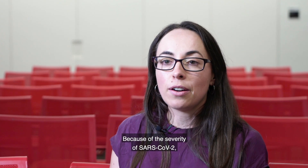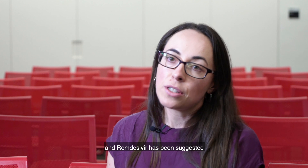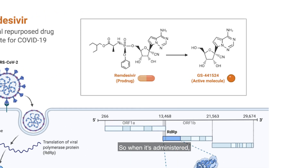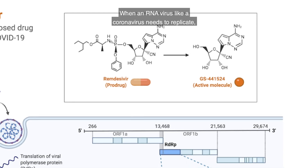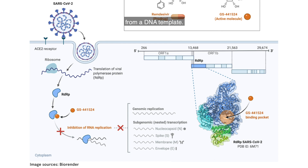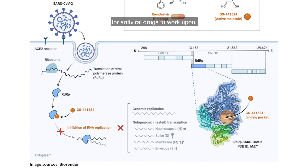Because of the severity of SARS coronavirus 2, there's obviously a lot of interest in developing specific treatments against it. Remdesivir has been suggested as a potential antiviral agent and has shown good efficacy in controlling viral infection in studies in vitro. Remdesivir is what's known as a prodrug — when it's administered, it becomes actively metabolised inside a cell to an active molecule. When an RNA virus like a coronavirus needs to replicate its own genome, it must encode its own RNA-dependent RNA polymerase, since our normal host cells can only make RNA from a DNA template. So these viral RDRP molecules represent a potential novel target for antiviral drugs.